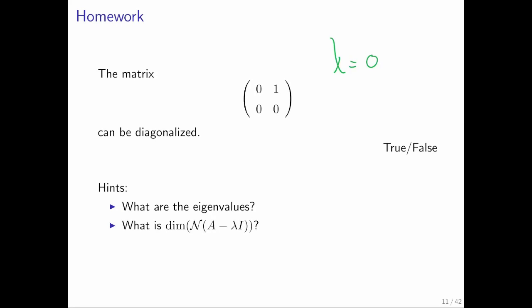So clearly here the only eigenvalue is lambda equals 0. Why? Because this is an upper triangular matrix and it has zeros on the diagonal.